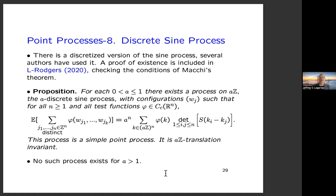The first existence theorem: there exists a determinantal point process — the sine process — whose kernel is the translated sinc function. This process is simple and translation invariant under ℝ. We also need a discrete version: the A-discrete sine process, sitting on the lattice AZ. Several papers have used this process, but we couldn't find a proof of existence, so we included one checking Macchi's theorem. For each parameter A ∈ (0,1), there exists this process with a discretized sine kernel on AZ^n, and it is AZ-translation invariant. It does not exist for A > 1.